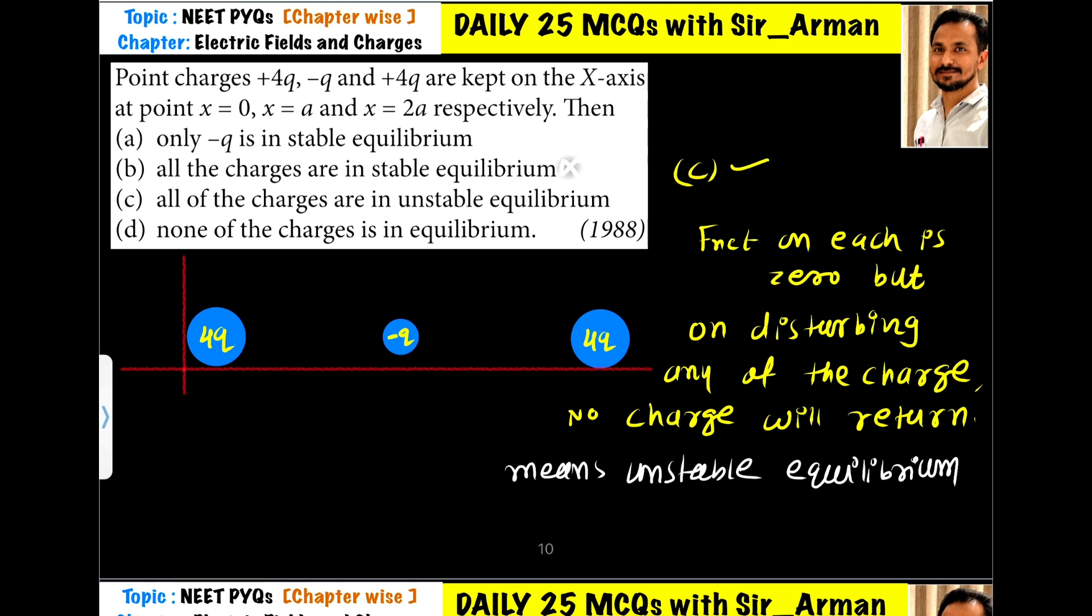Hence, option B is also incorrect. All of the charges are in unstable equilibrium, right?